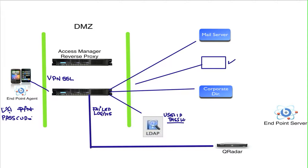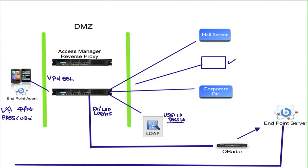Now, depending on the context and what the user is trying to do — all of that is configurable — what the SIEM can do is, after a certain number of failed logins, because the user hasn't reported that the phone was lost or stolen, the SIEM can send a message to our endpoint server, have the endpoint server send a command to the endpoint agent, and have the device perform a selective wipe, erasing all corporate data from that device.